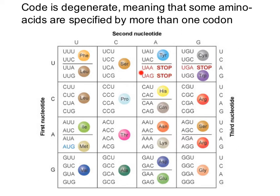Some sequences, instead of coding for an amino acid, code for stop signals. These are the ones that indicate where the peptide chain is going to stop — when does translation stop.